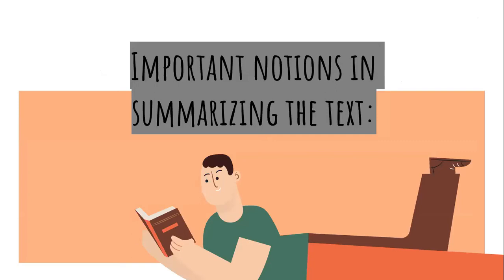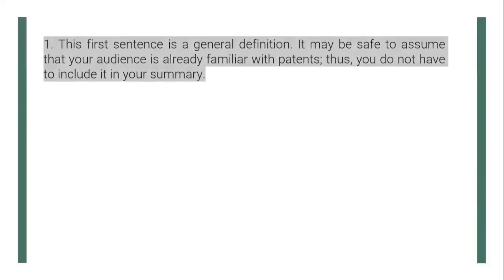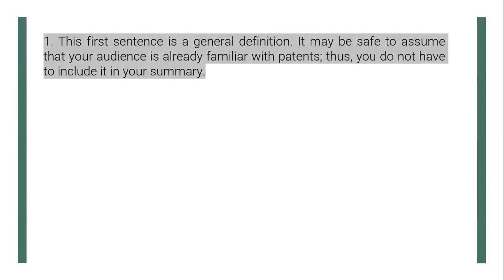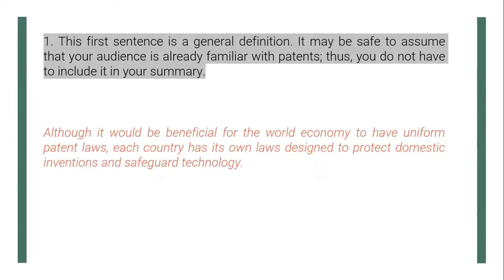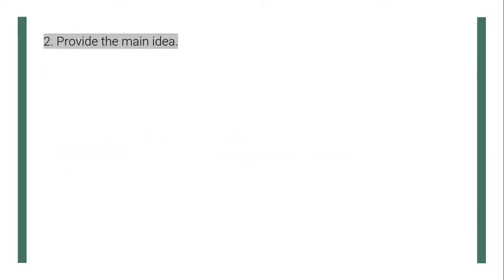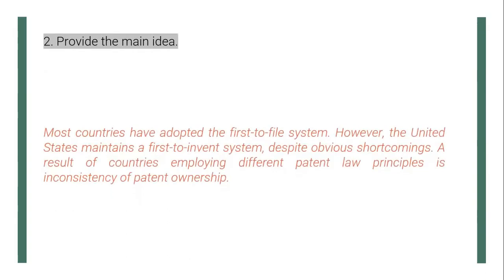These are the important notions in summarizing the text. The first sentence is a general definition — it may be safe to assume that your audience is already familiar with patents, so you don't have to include it in your summary. You may exclude it. Then provide the main idea: look for the central message of the text. For example: 'Most countries have adopted the first-to-file system. However, the United States maintains a first-to-invent system, despite obvious shortcomings. A result of countries employing different patent law principles is inconsistency of patent ownership.'